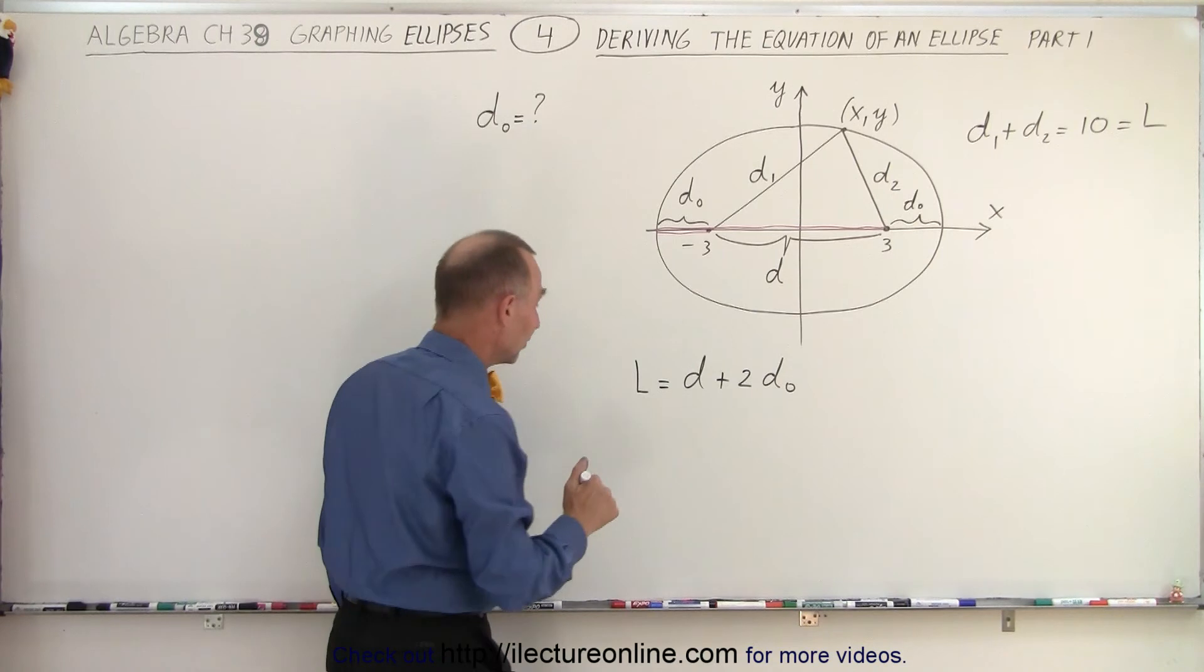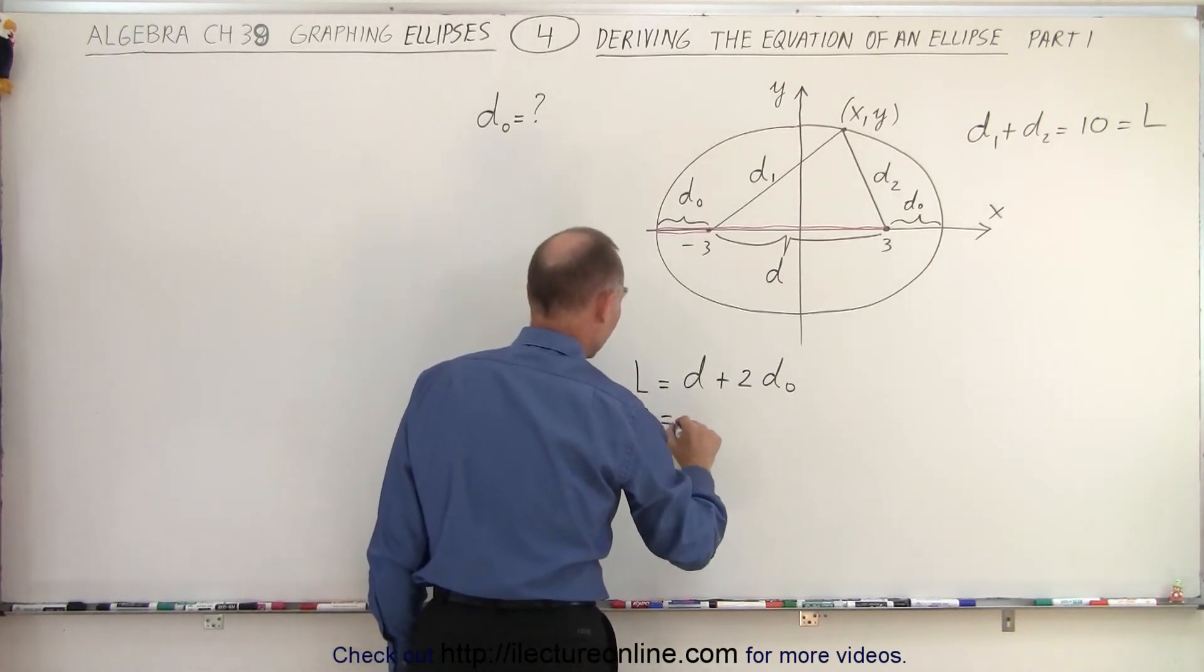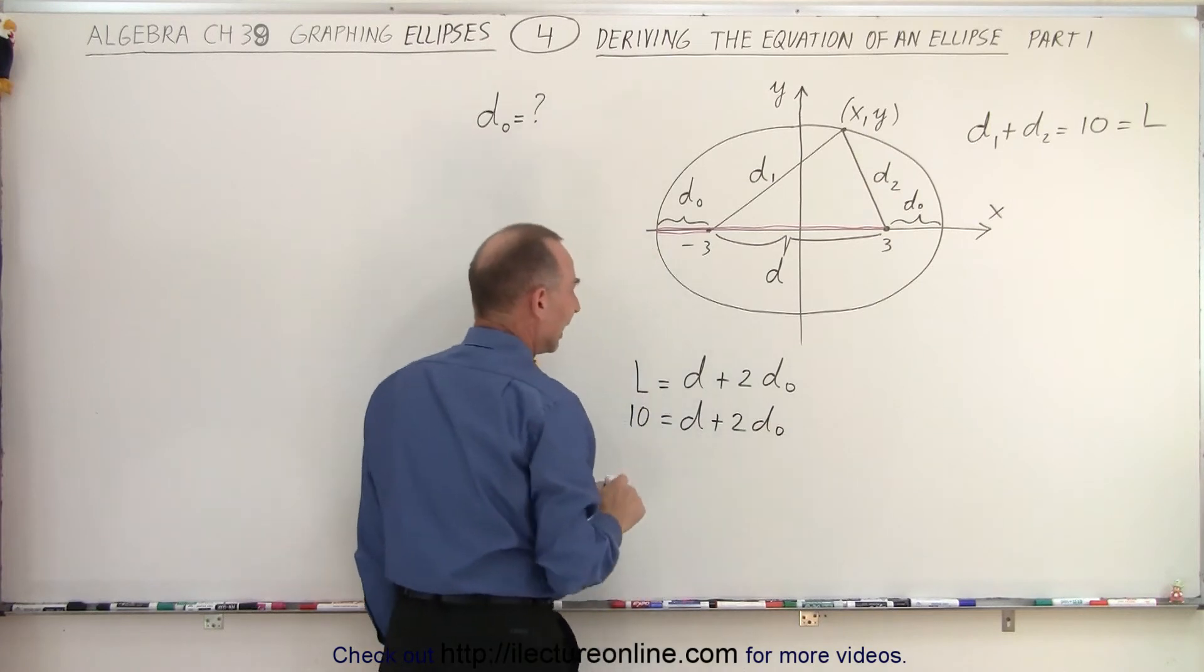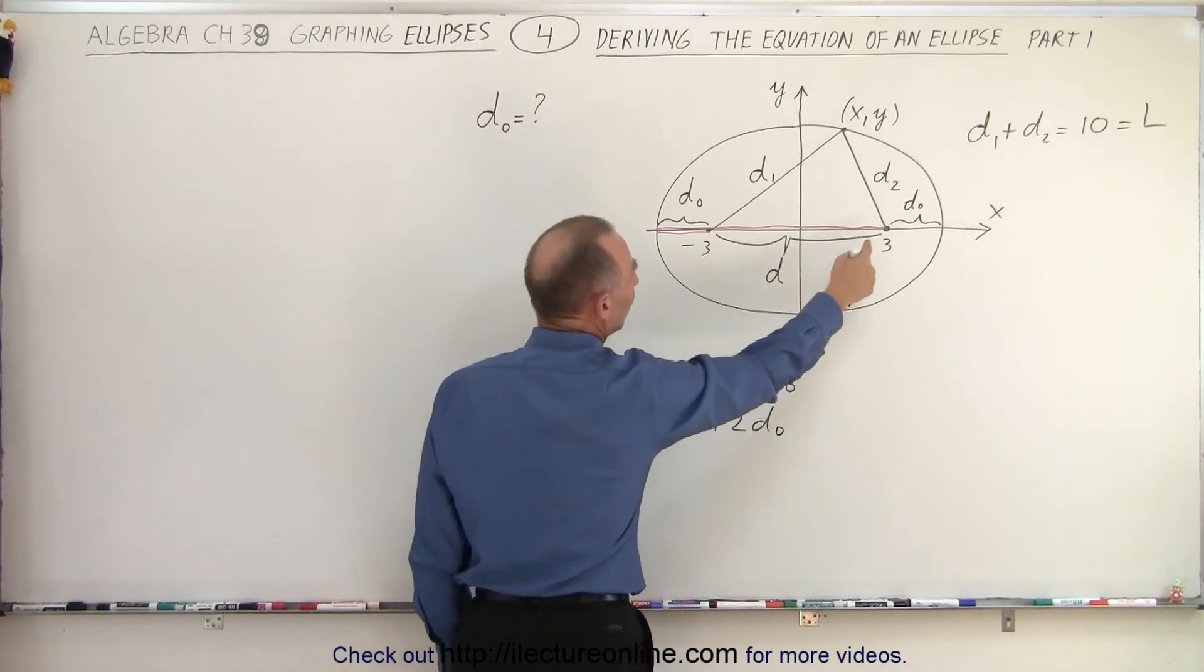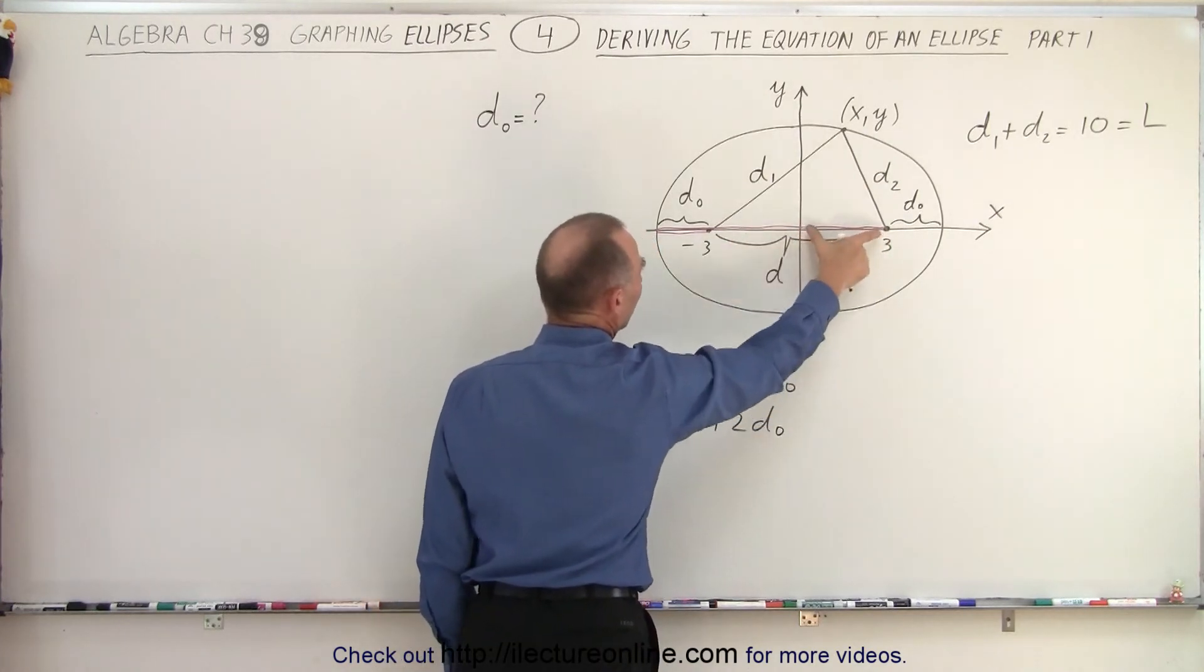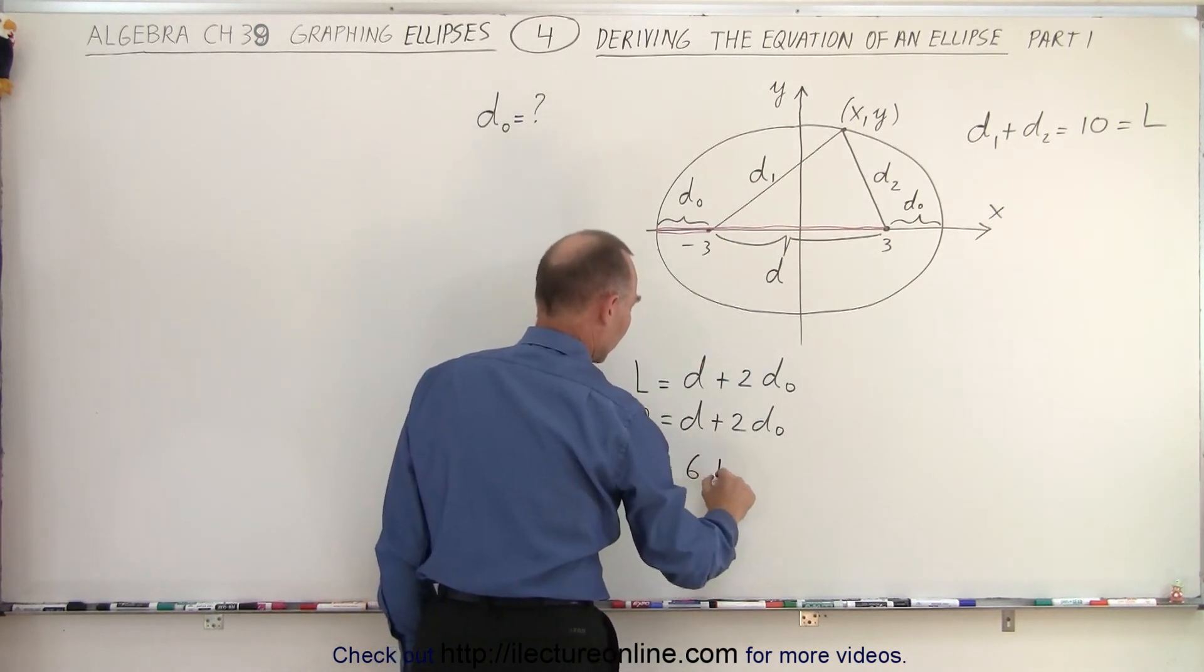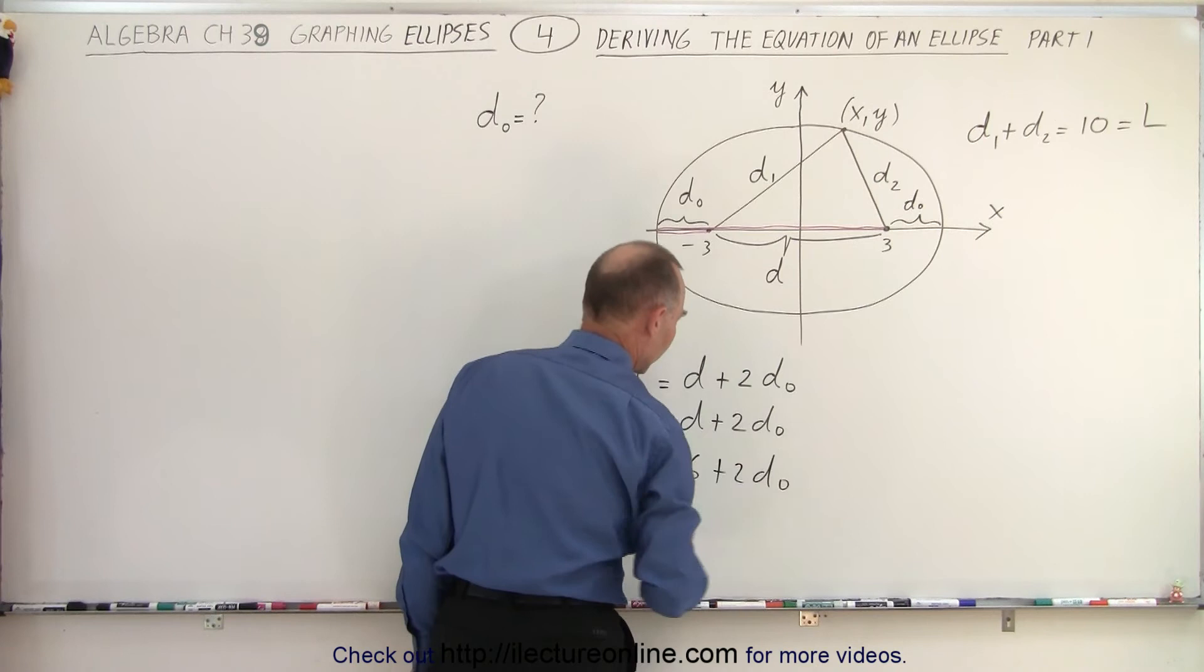We know that the length of the string is equal to 10, so 10 is equal to d plus 2d sub 0. And then d, the distance here will be the distance from there to there, that would be 3 plus 3 which is 6, so 10 is equal to 6 plus 2 times that small distance d sub 0.